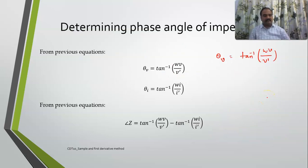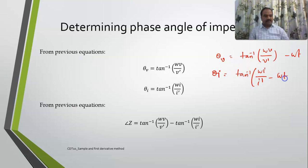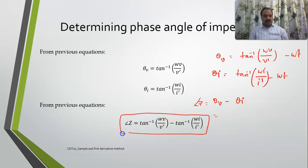So θv = tan⁻¹(ω·v / v') − ωt, and θi = tan⁻¹(ω·i / i') − ωt. For the angle of Z, we compute θv − θi, and the ωt terms cancel, giving: angle of Z = tan⁻¹(ω·vn / v'n) − tan⁻¹(ω·in / i'n), evaluated at the nth sample.